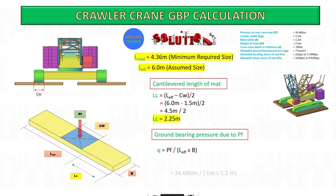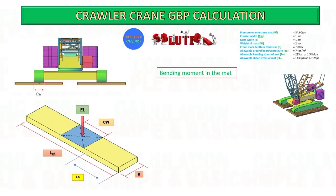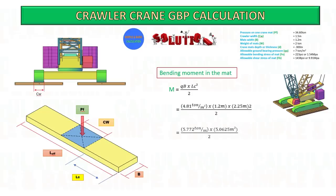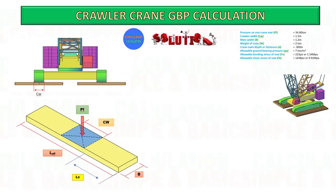Ground bearing pressure due to point load: point load on the mats divided by the assumed length, multiplied by width of mat. Bending stress due to moment on mat: moment value divided by width of mats, multiplied by thickness of mats to the power of 3, then divided by 6 — this is the inertia of the mat.